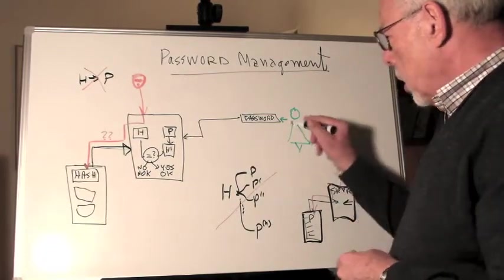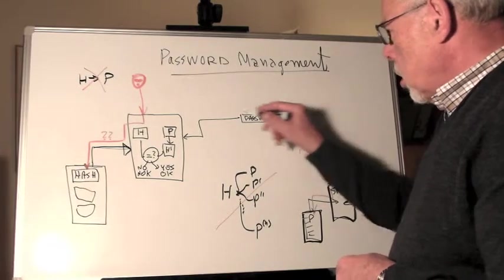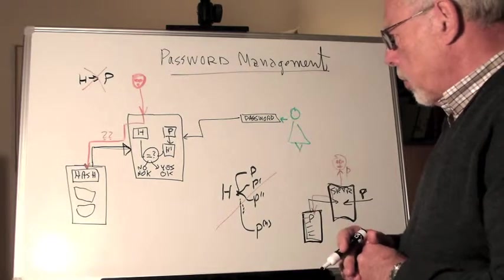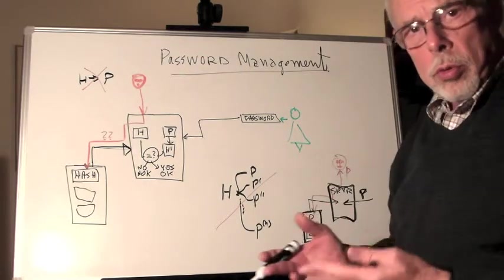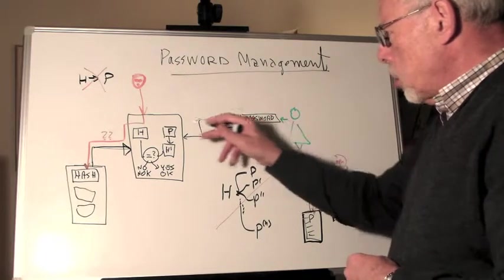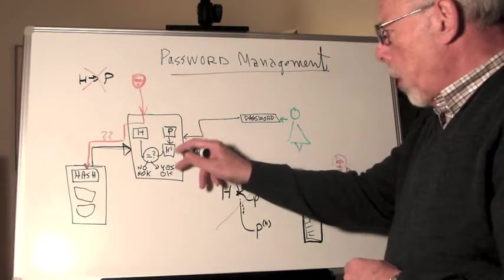And when Alice comes, approaches the server, trying to identify herself and get permission to do her thing with the computer, she offers a password.